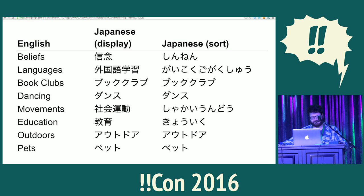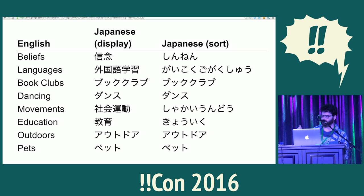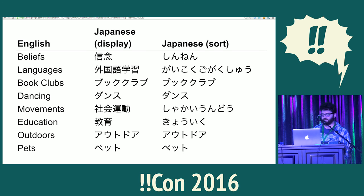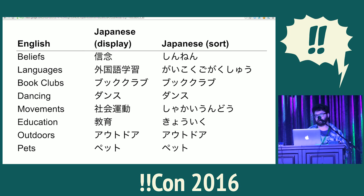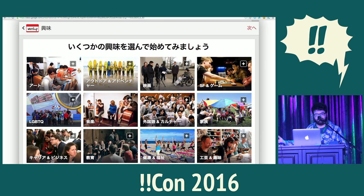Here was our solution. We decoupled the display language from the language that we sorted on. For each category, we got the hiragana translation from our Japanese translators and used that to sort instead. In total we only had about 24 categories to translate, so it was actually pretty straightforward. When determining how to order the categories, we used a sort with a Japanese Collator on the translation based on the phonetic alphabet, but continued to display the original Japanese copy, no matter what alphabet it was in. Our Japanese testers were now happy with the ordering, and therefore so was I.